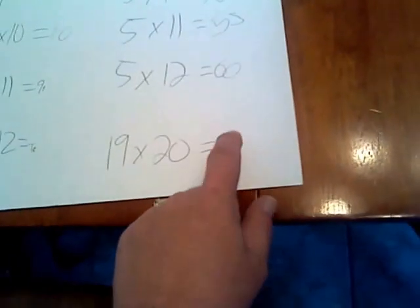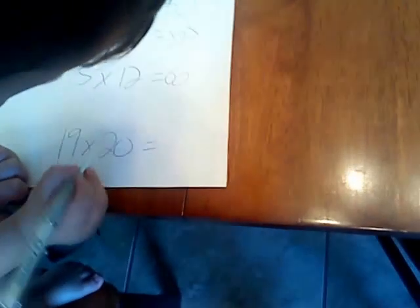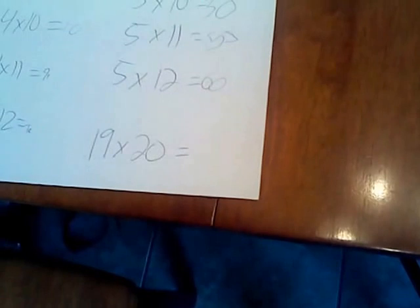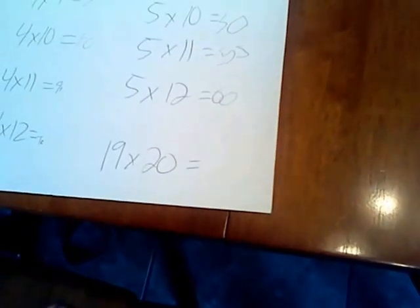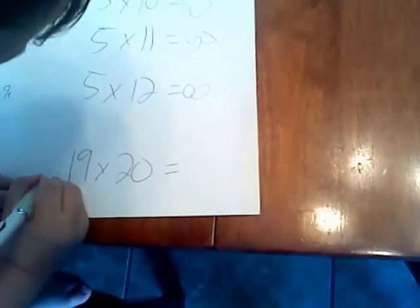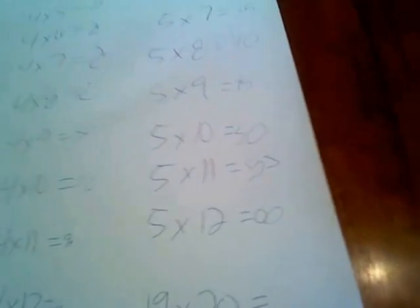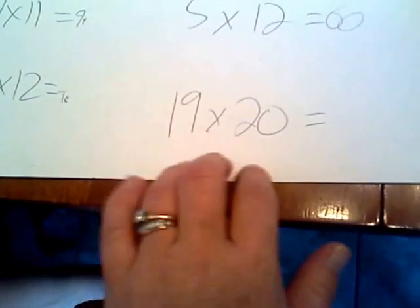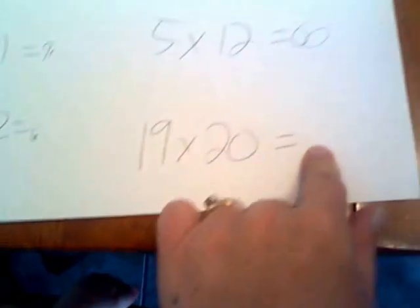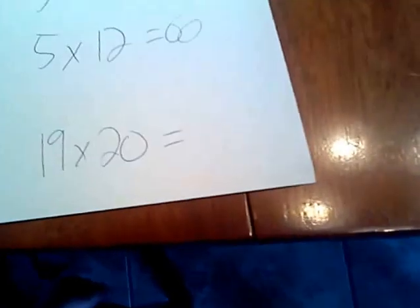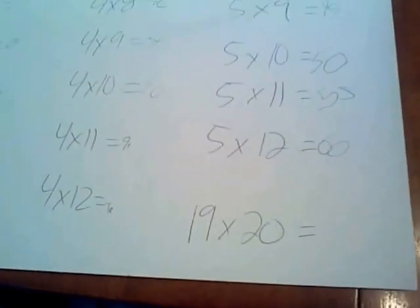19 times 20 equals? 19 times 20 is... Not sure about that one? Alright, I think you did a great job on all those times tables. We will come back and do 19 times 20 another time.